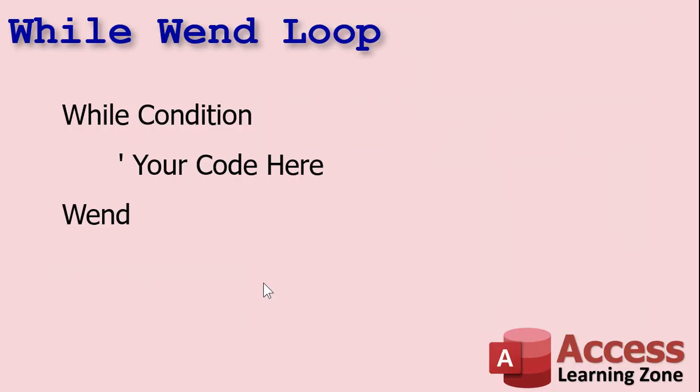All right. So the while Wend which stands for while end when get it. The while Wend loop which I'm just going to refer to as a while loop from now on. Is real simple. It's while some condition is true, do some stuff until you hit the end of the loop and it'll just keep repeating as long as that condition is true.